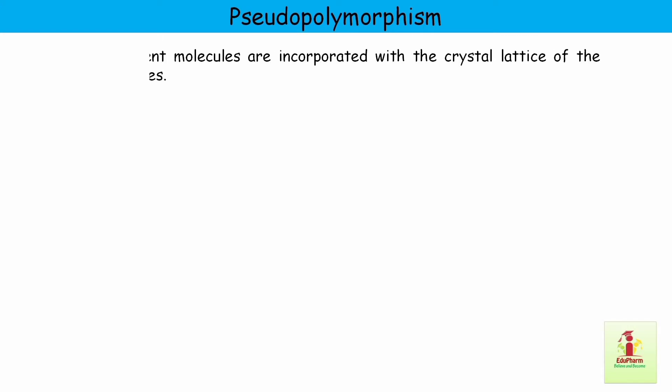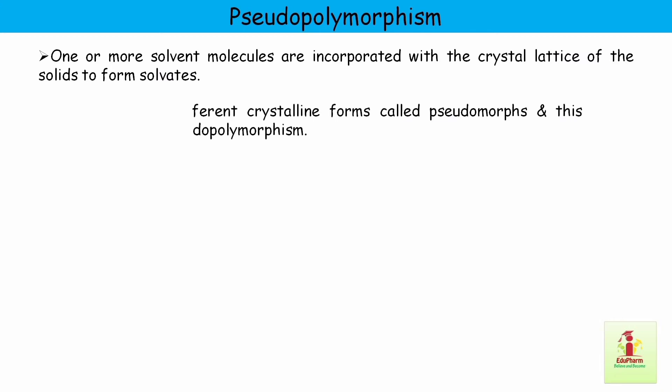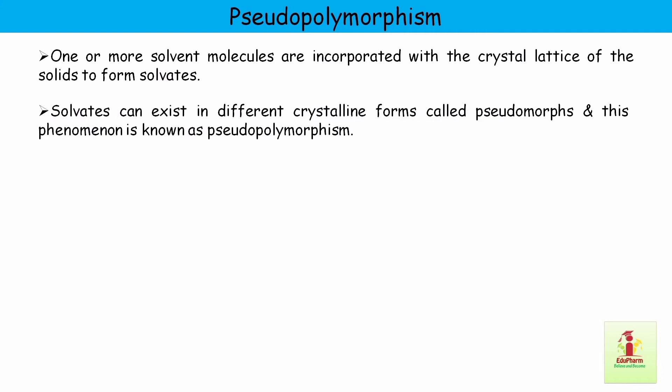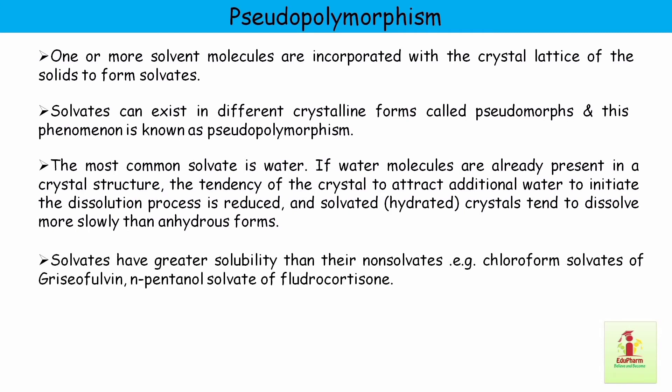Regarding pseudo-polymorphism: many drugs can associate with solvents to produce crystalline forms called solvates. Solvates can exist in different crystalline forms called pseudo-polymorphs, and this phenomenon is known as pseudo-polymorphism. Water is the most common solvate. If water molecules are already present in a crystal structure, the tendency of the crystal to attract additional water to initiate dissolution is reduced, so solvated crystals tend to dissolve more slowly than anhydrous forms. However, solvates have greater solubility than their non-solvates. Examples include the chloroform solvate of griseofulvin and the n-pentanol solvate of chlorocortisone.